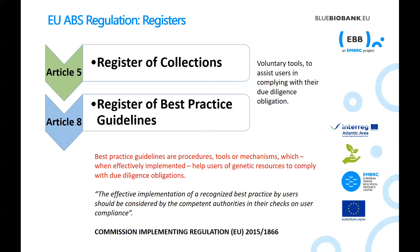The EU ABS regulation register of collections and register of best practice guidelines are two separate voluntary tools to assist users in complying with their due diligence obligations. Collections of genetic resources and the best practices they employ to comply with EU ABS regulation can both be registered. Best practice guidelines are procedures, tools or mechanisms which, when effectively implemented, help users of genetic resources to comply with due diligence obligations. The effective implementation of a recognized best practice by users should be considered by the competent authorities in their checks on user compliance.